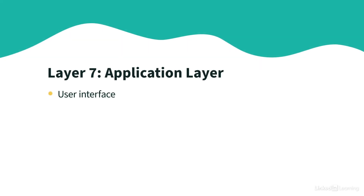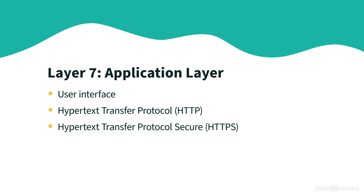Finally, layer seven is the application layer, and it's the layer users typically interact with. If we're surfing the web, we're using a protocol like HTTP, which stands for Hypertext Transfer Protocol, or HTTPS, which is short for Secure HTTP. If we know the name of a website but not its IP address, we can ask a DNS server. That DNS server will take the name that we provide and give us back the IP address corresponding to that name. The protocol that makes that possible is Domain Name System, or DNS — an example of something that lives here at layer seven.